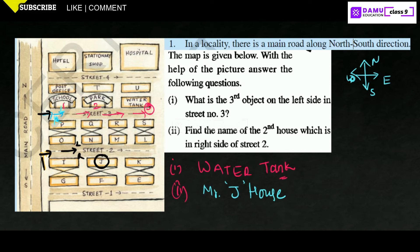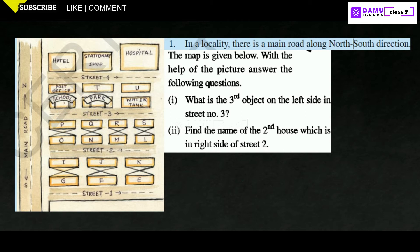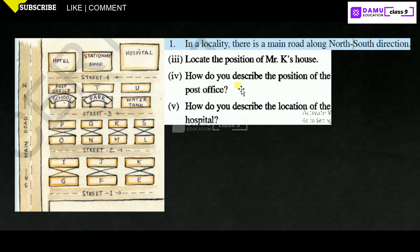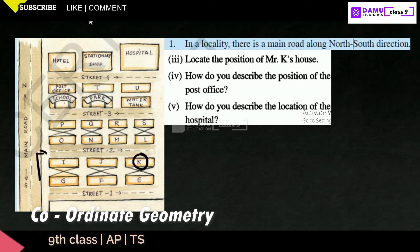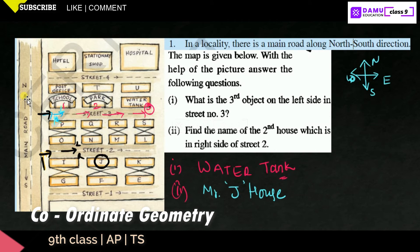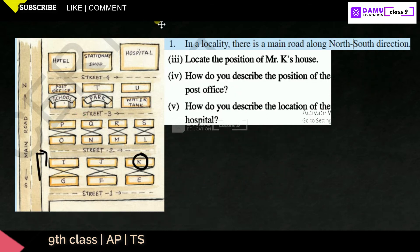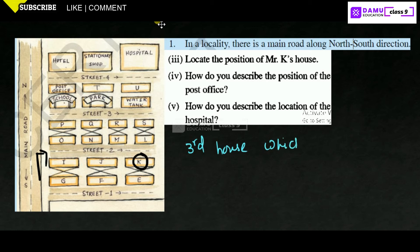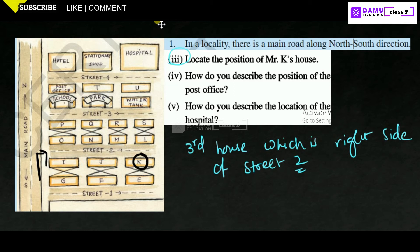Our third question: locate the position of Mr. K house. K house — according to the question, similar to how we found J, K is nothing but the third house which is on the right side of street 2. Our third one is over.